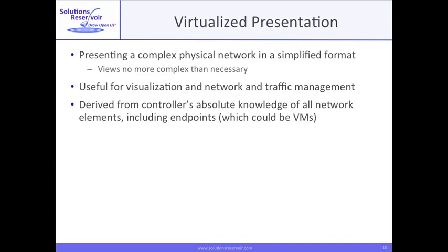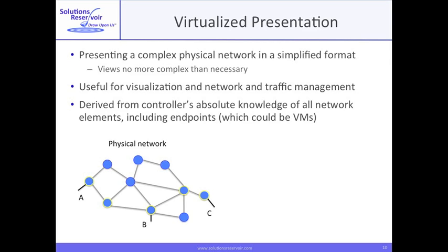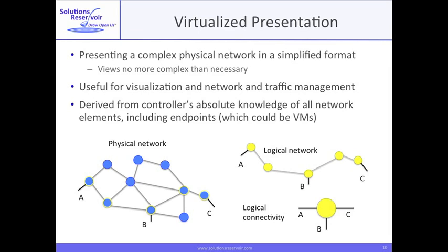With a virtualized network presentation, a user needn't see any more of his network than necessary. Consider a physical network with endpoints A, B, and C, which could even be virtual machines. The logical network is comprised of those elements linking A, B, and C, and on a logical connectivity basis, the SDN will enable you to specify rules for A, B, and C connectivity as if they were connected to only a single switch. The controller translates those rules into commands and table entries across all network elements, hiding the complexity behind the virtualized presentation.